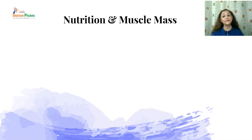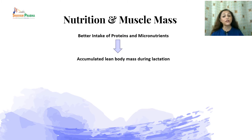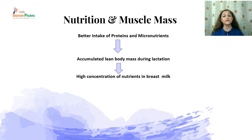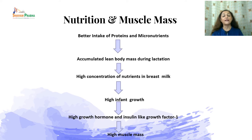Maternal nutrition and the muscle mass of mother and her infant are associated. If the mother takes good quality proteins along with micronutrients, this will help her maintain good lean body mass during the entire lactation process. It will also result in high concentration of nutrients in breast milk, supporting good infant growth, and higher amounts of growth hormone and insulin-like growth factor 1 — both important for infant growth and enhancing the infant's muscle mass.